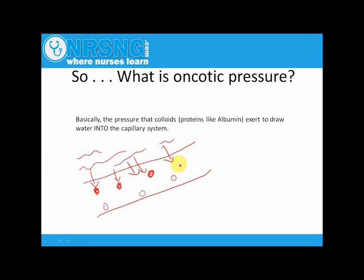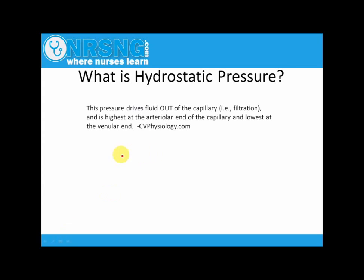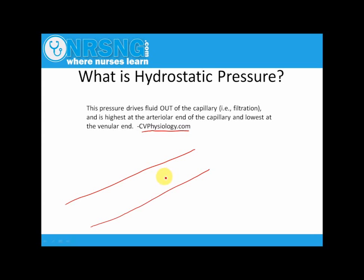Albumin is going to be the one we really focus on within the body because it exerts the most pressure — it's a very large protein within the capillary system. So what is hydrostatic pressure? Hydrostatic pressure is the pressure that drives fluid out of the capillary system. It's highest on the arterial end of the capillary and lowest at the venular end. Here again we have our capillary, and we have all these colloids — all this albumin — that's drawing water into the system.